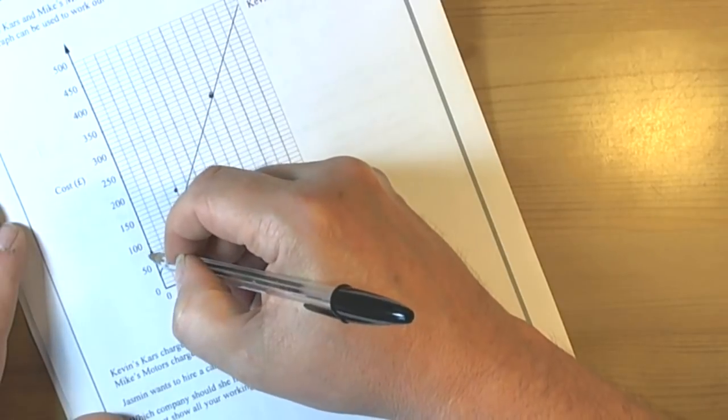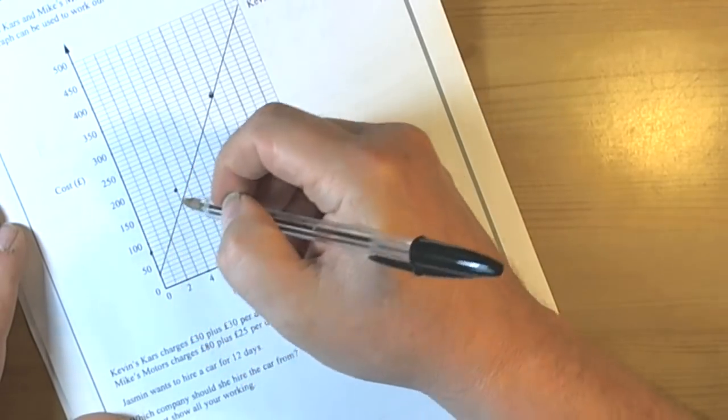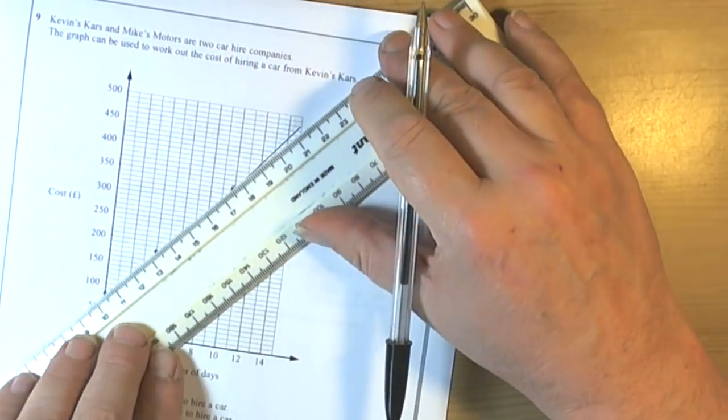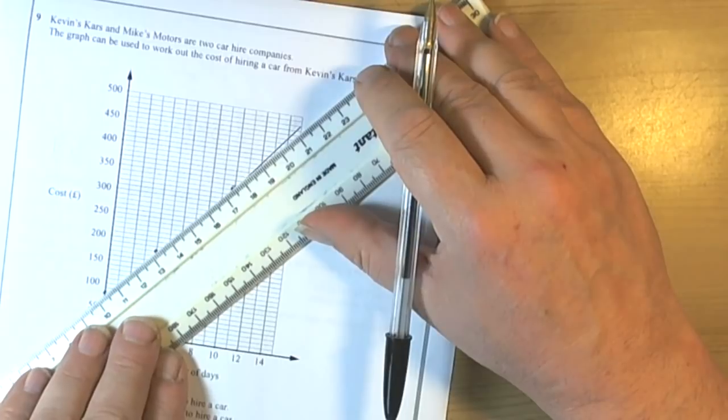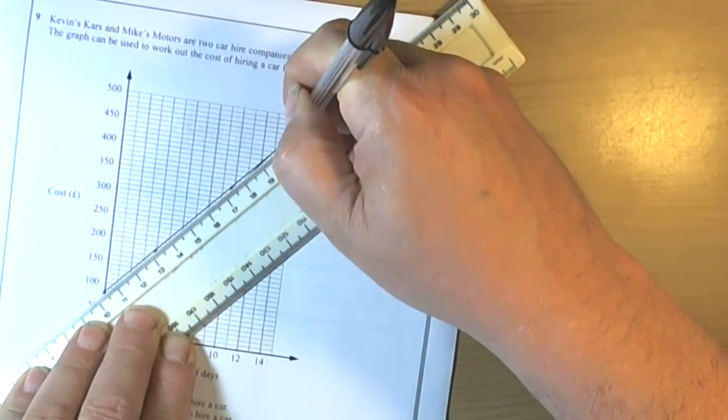Again, we were careful to work out the scale of the graph. Each of the lines go up in £10. So again I rule it and very carefully make sure our dots line up, which they do, so we can be quite confident we've done that formula correctly.